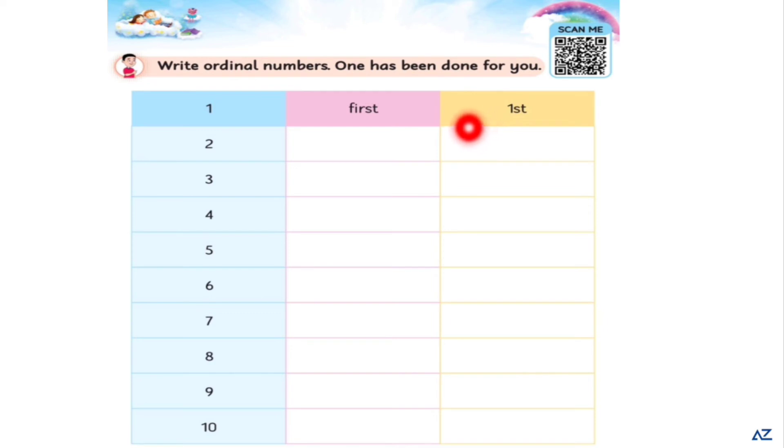2nd, S-E-C-O-N-D 2nd, and write here in ordinal number 2nd. 3rd, 4th, 5th, 6th, 7th, 8th, 9th and 10th. Write them carefully, dear kids.